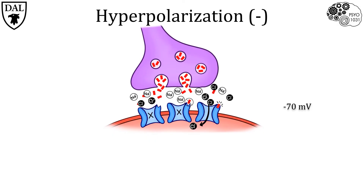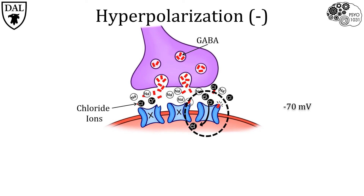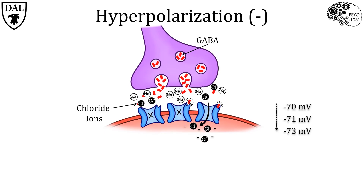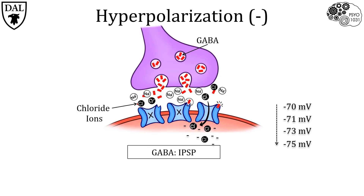What about hyperpolarization? A neurotransmitter that is almost always inhibitory at its synapse is GABA, and its receptor channel is permeable to negatively charged chloride ions, shown here as black circles. When GABA binds to its receptor, the channel opens and chloride ions are driven into the post-synaptic neuron because of their concentration gradient. Chloride brings its negative charge into the cell, making the cell more negative, which is called a hyperpolarization. If the channel remains open for longer, more chloride flows in, making the cell even more negative. This type of graded potential is called an inhibitory post-synaptic potential, or IPSP for short.